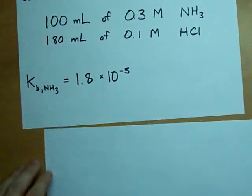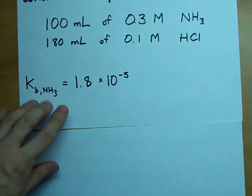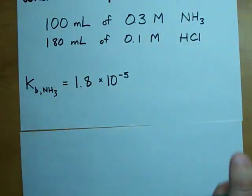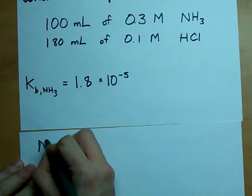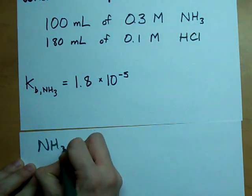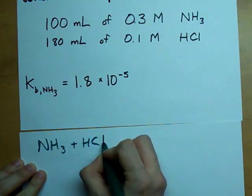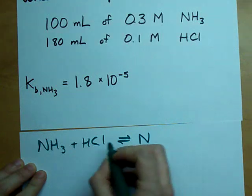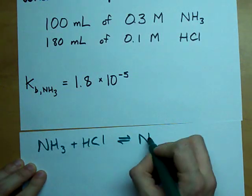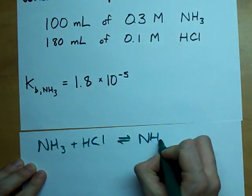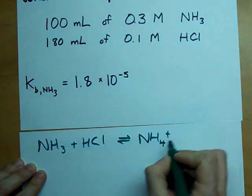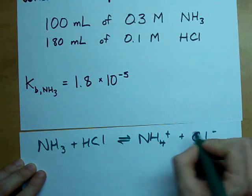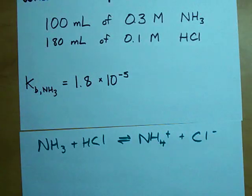Step 1: write the neutralization reaction. NH3 reacts with acid — the base steals the proton from the acid. You get ammonium and chloride.